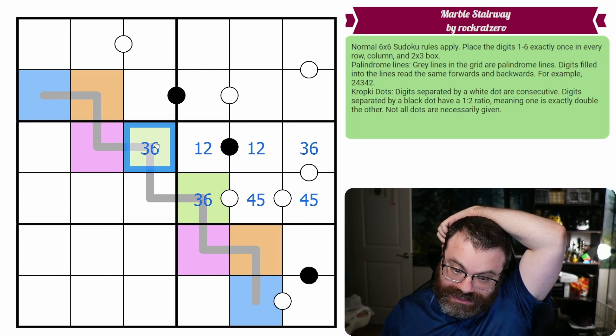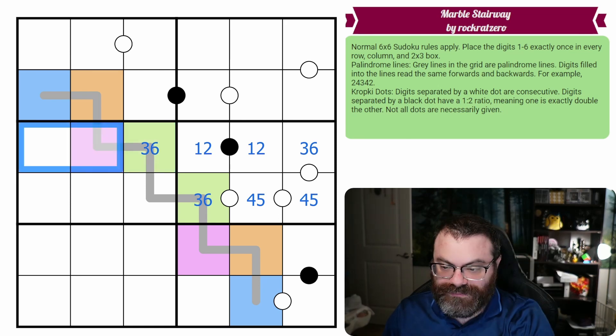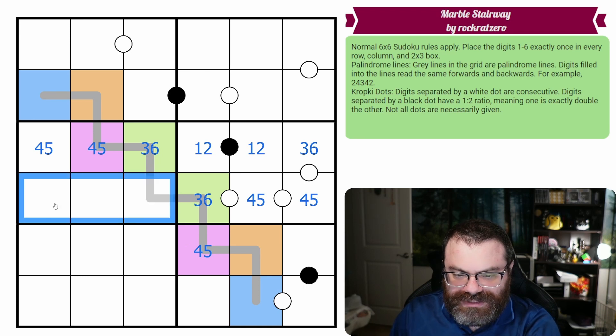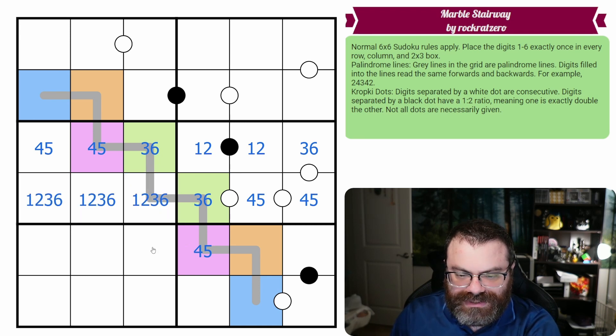That lets us put the 3, 6 here as well, which does leave a 4, 5 pair for this row, which does put 4, 5 here. I am going to fill 1, 2, 3, 6 here, but I'm not sure that that's needed.